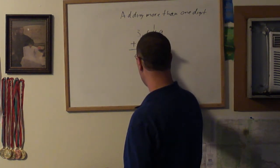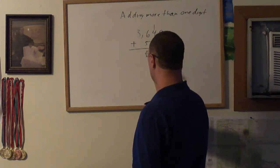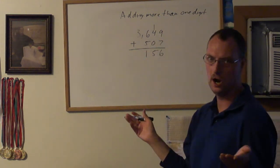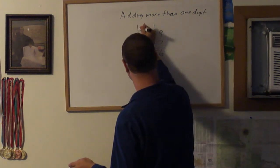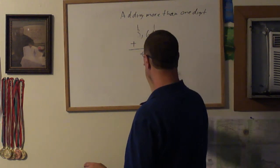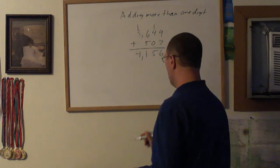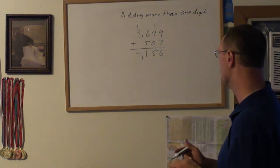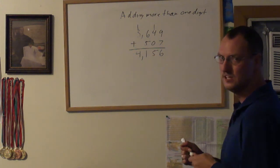I'll add the 1 to 4 plus 0 equals 5. Then let's go to the hundreds: 6 plus 5 equals 11. Put the 1 right there. The 1 goes in the thousands area. 1 plus 3 equals 4. So we have the answer 4,166.